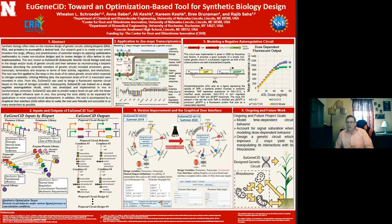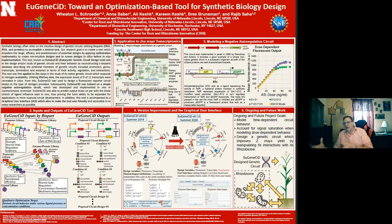Panel 4 shows how we had a predicted fluorescent reporter protein based on available nitrogen sources from the first version of EugeneSid, and how we were able to sophisticate that to the second version of EugeneSid by adding terminators, and how we were also able to add a graphical user interface.